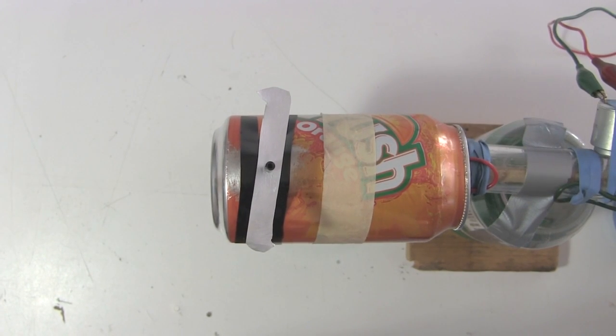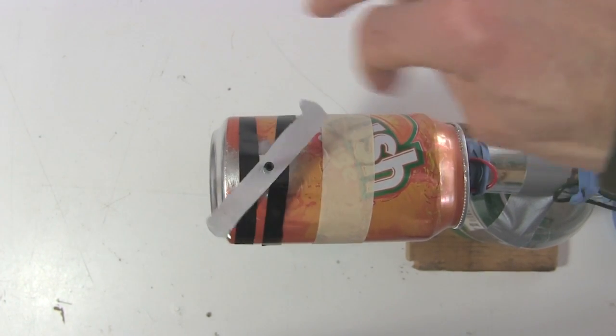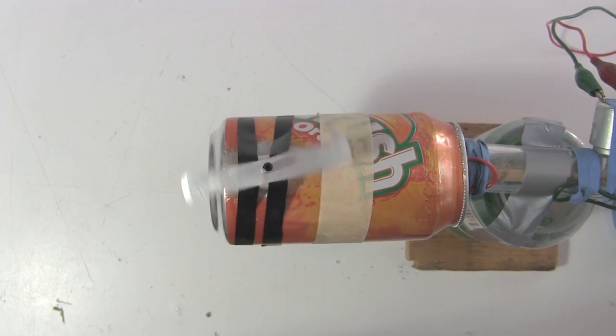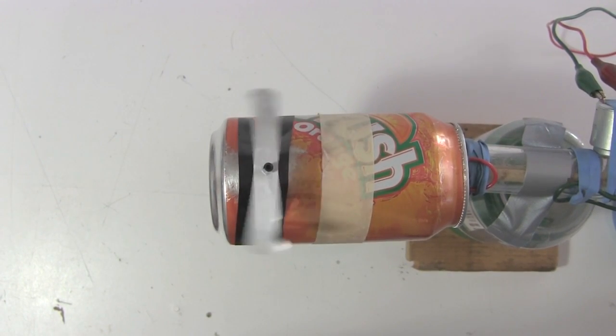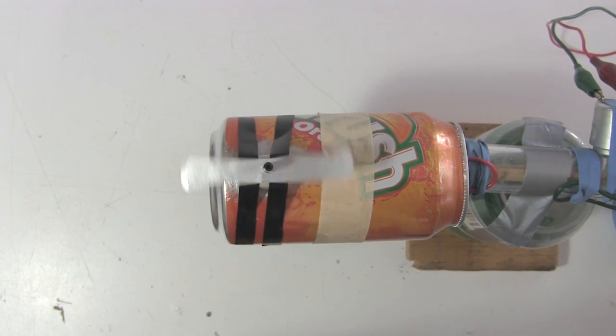The solution was to increase the speed of the Van de Graaff motor. That increased the amount of charge being pumped and therefore the amount of charge at the sharp points. That resulted in a stronger ion wind at the sharp points, strong enough to overcome the repulsion forces and make the rotor spin.